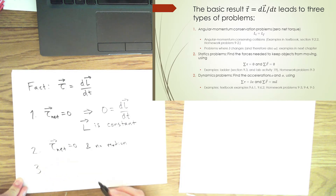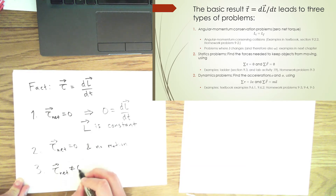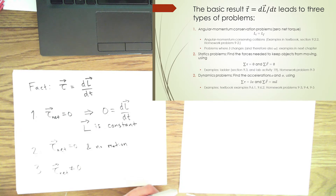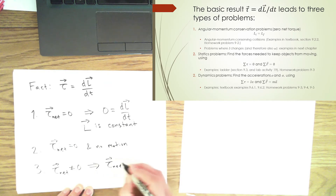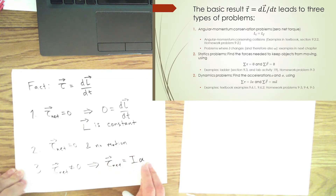A third type of problem is when there is a non-zero net torque — tau net is not zero. In that case, you will have some angular acceleration. Just like F equals ma, if tau is not zero, then tau equals I alpha, where I is moment of inertia and alpha is angular acceleration. There is definite motion in these kinds of problems.